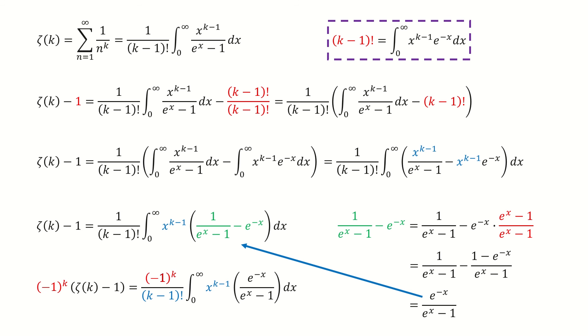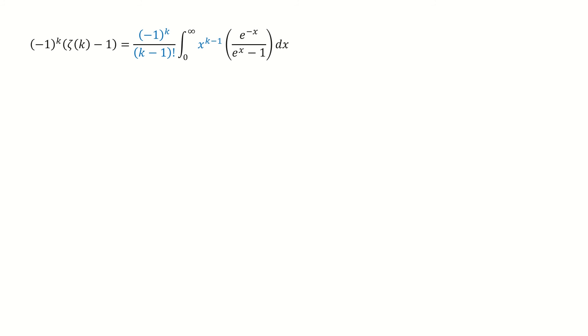Next, we multiply the minus 1 to the power k on both sides. Then we put this minus 1 to the power k and this factorial term inside the integral. Then we take the sum on both sides.